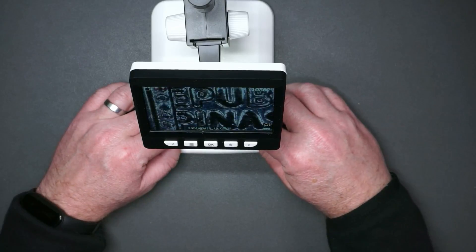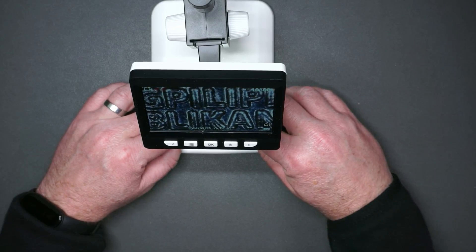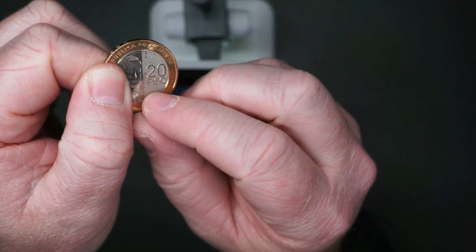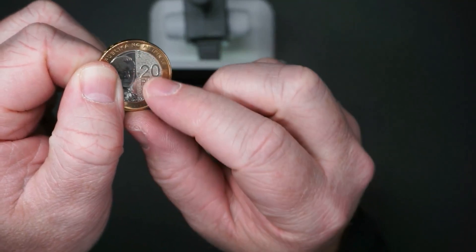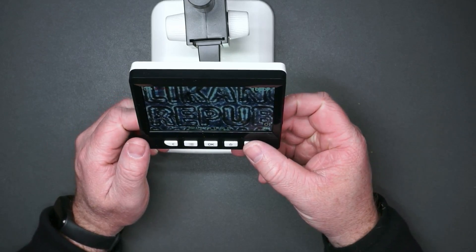Look at that, there is writing all over this coin that you can't see at all. So what I thought was just textured part of the coin, this is actually writing, that's amazing. Now with this we can actually zoom in even more, this is a digital zoom.